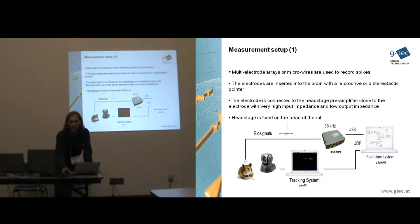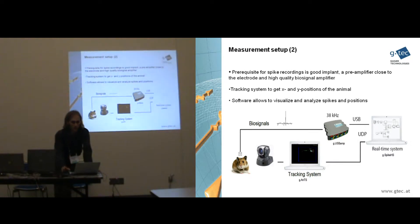And you have to fix the head stage on the head of the rat. Normally you do it with some dental cement. Then the head stage amplifier is connected to a main amplification unit which is doing the high sampling, for example 40 kHz. And you need also a tracking system to know where the rat is located in space. In this case we use a video tracking system to get the X and Y position into the computer together with the spikes. And here we run the real-time analysis software to visualize and analyze the data.